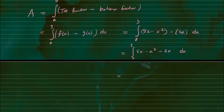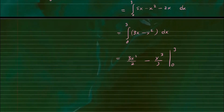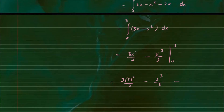Let's simplify before we integrate. We rewrite the integral from zero to three of 3x minus x squared dx, since 5x minus 2x equals 3x. Now we integrate using the power rule: the integral of 3x is 3x squared over 2, and the integral of x squared is x cubed over 3, evaluated from zero to three. When we plug in the lower limit zero, everything becomes zero, so we subtract zero.